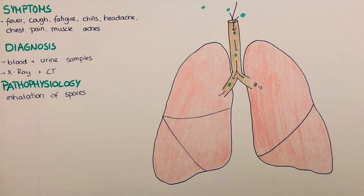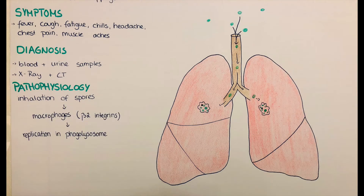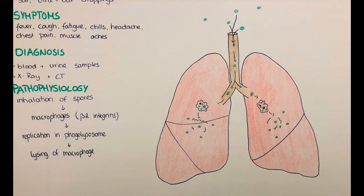Now regarding the pathophysiology: once the spores are inhaled, in the lungs the Histoplasma cells infect host macrophages by binding to beta-2 integrins on the surface of the macrophage. There the spores avoid phagocytosis by specific virulence factors, namely Hsp60, which prevents the action of the innate immune system. Within the macrophage they reproduce in the phagolysosome until they destroy the cell. In healthy individuals, T cells activate the macrophages so they can kill the pathogen.